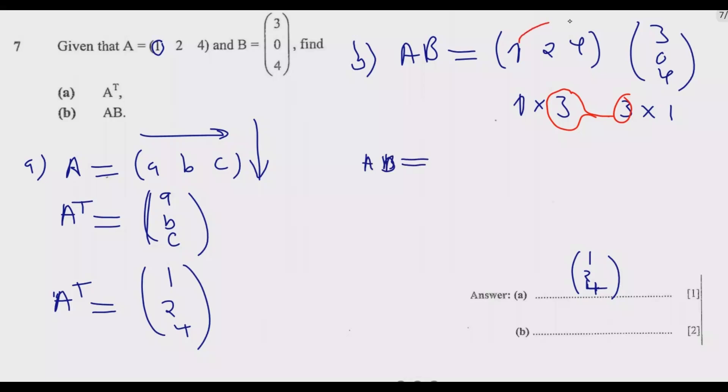What this tells us now is 1 multiplied by 3, then 2 multiplied by 0, then 4 multiplied by 4. That's what this tells us. So you notice that because these two are equal, the end product will be the outer one, this one and this one, to be 1 by 1. That will be the ending. So we are going to get a number. 1 by 1 means it's just a number.